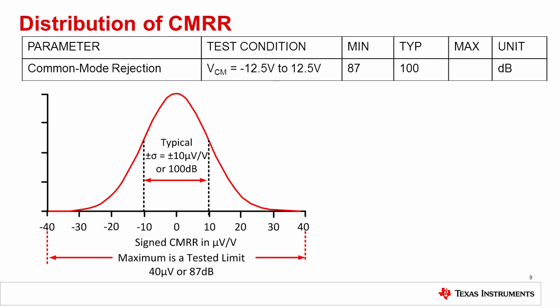Common mode rejection relates to how well the early voltage of the input transistors match. It's possible for the VOS versus common mode voltage to have a positive or negative slope. In fact, if you were to look at the distribution of the common mode rejection ratio, you would get a Gaussian distribution. The typical value of the CMRR specification is set to the mean plus one standard deviation. In the example shown, the mean CMRR is zero, and one standard deviation is 10 microvolts per volt, so the typical CMRR is 10 microvolts per volt, or 100 dB.